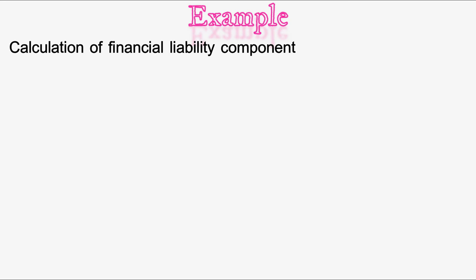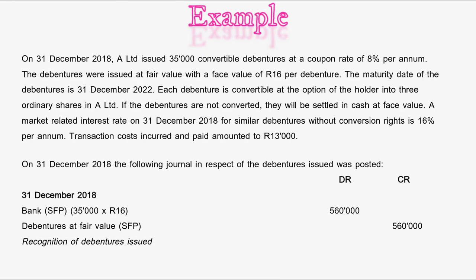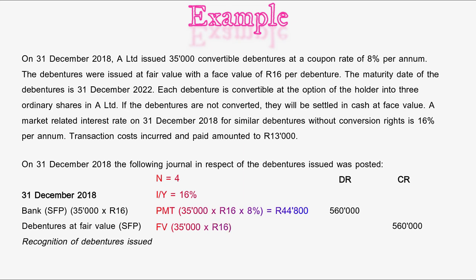Let's calculate the financial liability component. The period n = 4 years (31 December 2018 to 31 December 2022). I/Y = 16%. Payment = 35,000 debentures × 16 rand × 8% = 44,800 rand. Future value = 35,000 × 16 rand = 560,000 rand. Computing the present value gives us 434,642 rand.